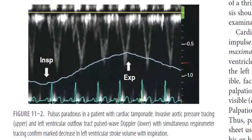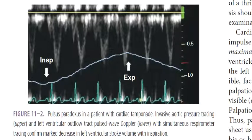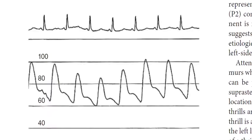This figure shows pulsus paradoxus in a patient with cardiac tamponade. The invasive aortic pressure tracing and left ventricular outflow tract pulse wave Doppler with simultaneous respirometer tracing confirm marked decrease in left ventricular stroke volume with inspiration.